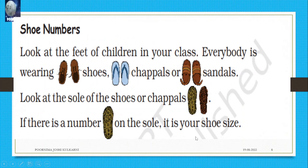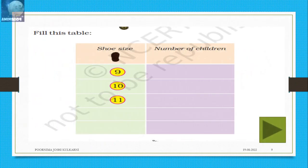Next — shoe numbers. Look at the feet of the children in your class. Everybody is wearing shoes — of course, uniform. In the uniform you have shoes, but they have given chappals also and sandals. Look at the sole of the shoes or chappals; if there is a number on the sole, this is your shoe size. Now fill in this table: shoe size, number of children. Number nine — eight students roughly. You do this activity in your classroom, ask your friends, and list out.